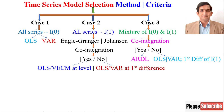In this video I will explain how to select a time series model. Case number one: if all the series are I(0), meaning that all series are stationary at level. When I say stationary, it means a time series has constant mean, variance, and covariance across time.